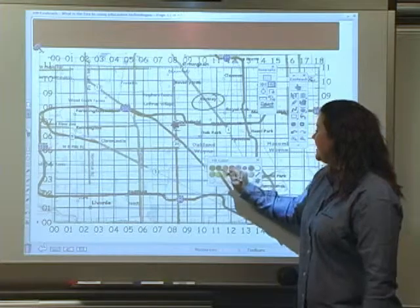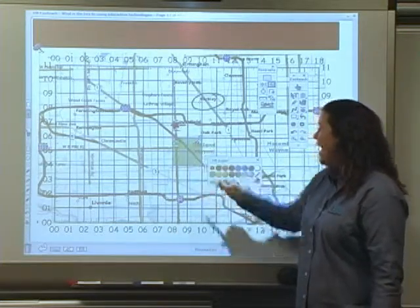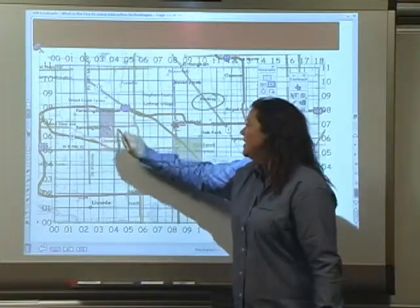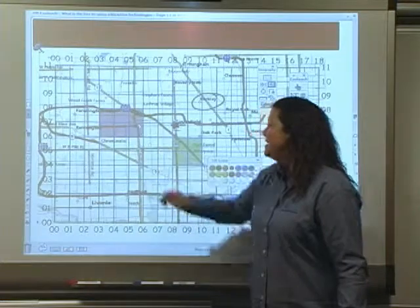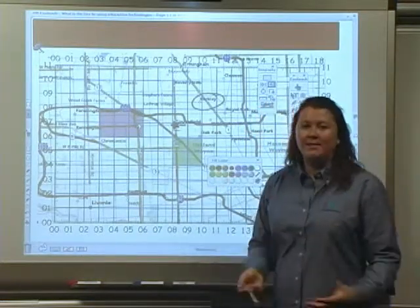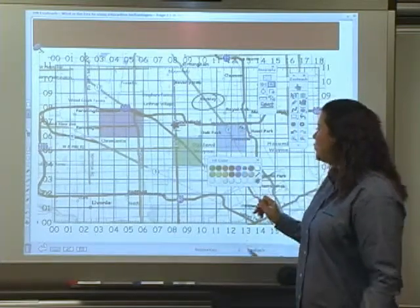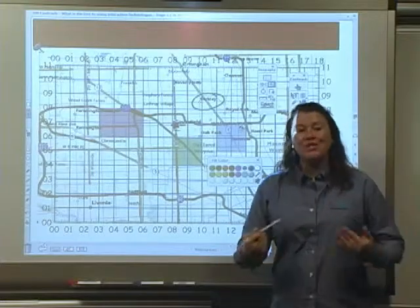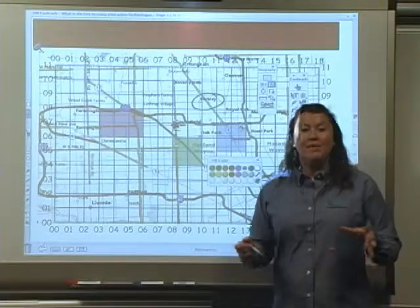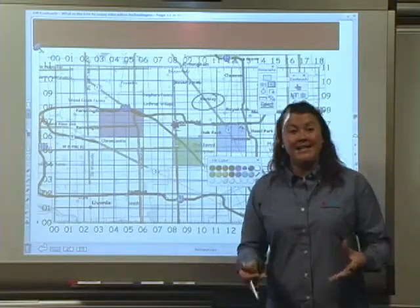Students can select different fill colors to highlight each square according to how the land in that zip code is actually being used. So it could be that red is areas of industry, green is farmland and parks, blue is water. We're able as a class, bringing students out to the board and using their knowledge of the area, to build up a visual representation of that zip code in a very collaborative and interactive way.